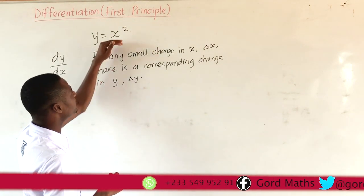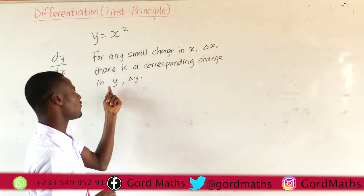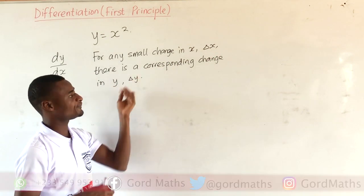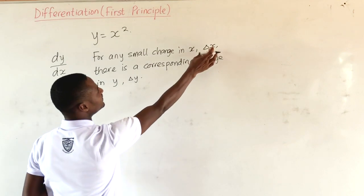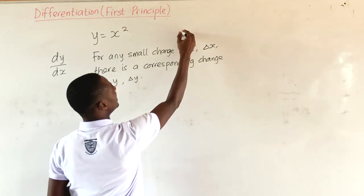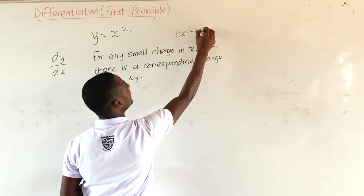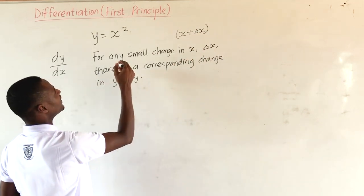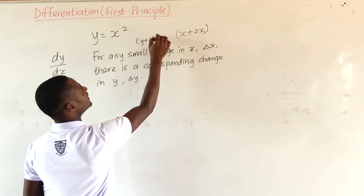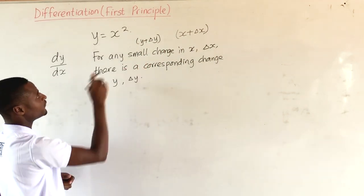So, when x increases by delta x, then y will also increase by delta y. Supposing we are increasing x by delta x, that means our new x will become x plus delta x, and our new y will also become y plus delta y.